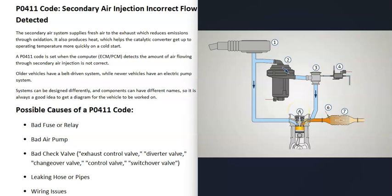The main purpose of the secondary air injection system is to control emissions for only the first 30 seconds to one minute when an engine does a cold start. This is because the catalytic converter doesn't start working and controlling emissions until it gets hot. The same is true for the O2 sensors — they also need to warm up before they can get good readings and start reporting information back to the computer.